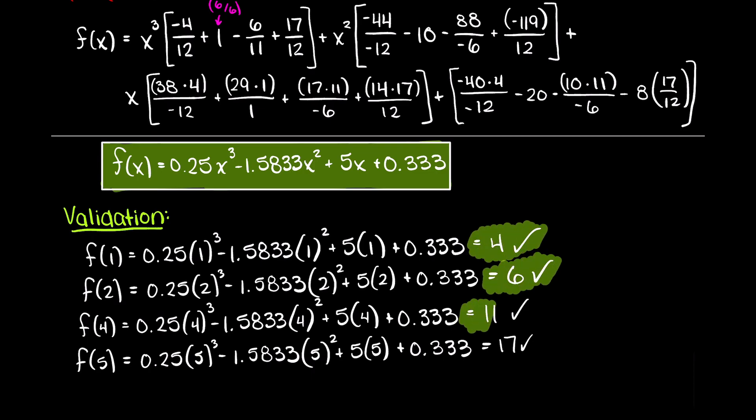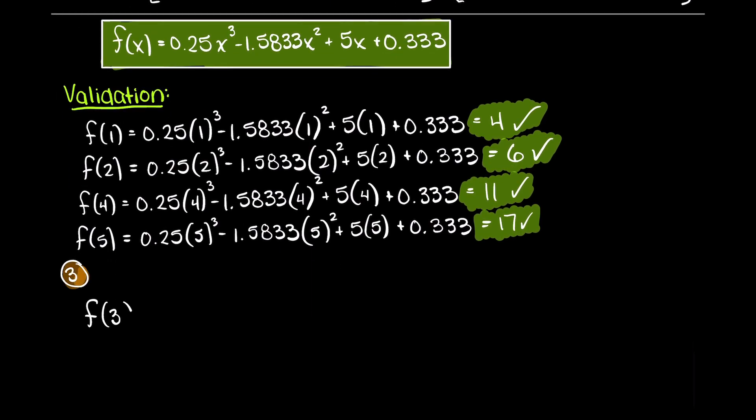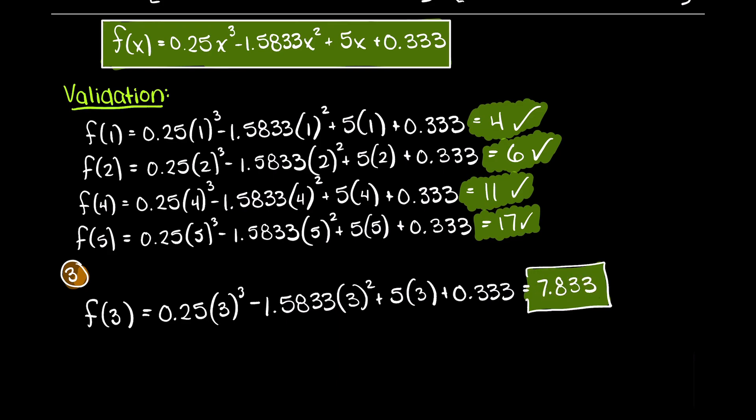As you can see, we are returned our outputs as expected. Lastly, we just need to plug in our input of 3 into our newly found Lagrange interpolation function, and we receive an output of 7.833, which is the solution to the question that we were asked.